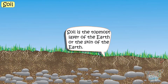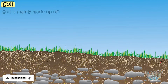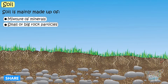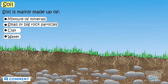Soil is the topmost layer of earth, or the skin of earth, which is mainly made up of a mixture of minerals, small or big rock particles, clay, water, and organic matter.